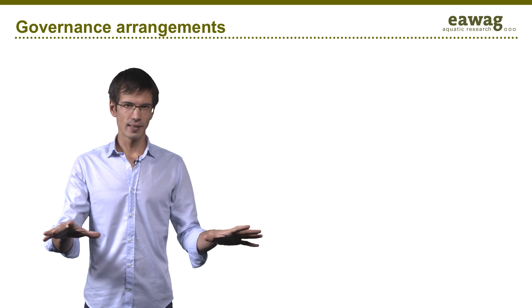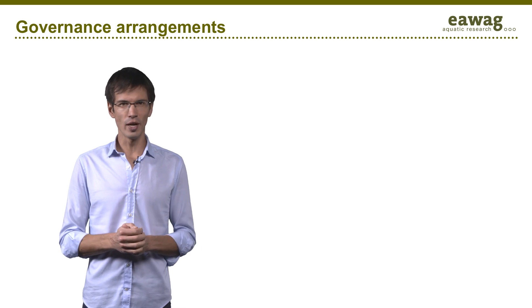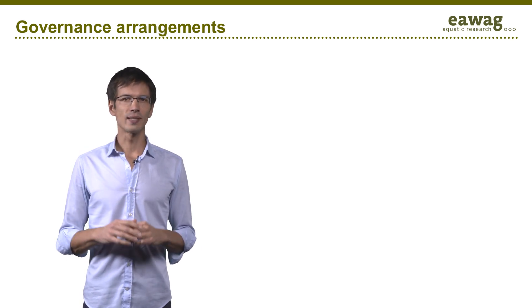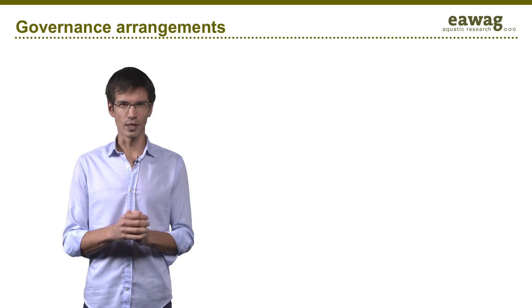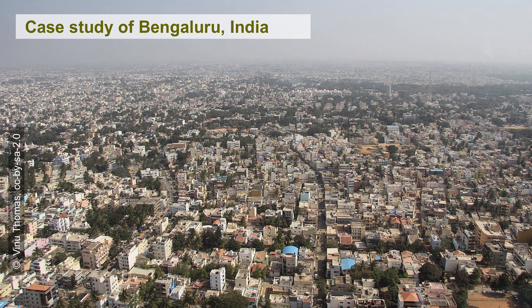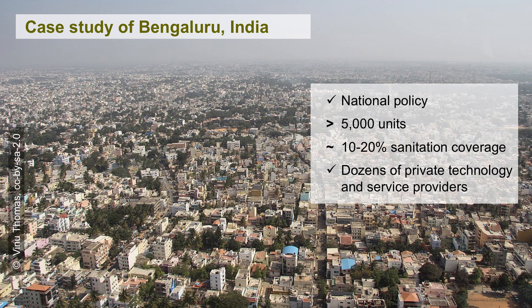The scaling up of decentralized systems needs to be accompanied by the development of appropriate governance arrangements and monitoring. Otherwise, the risk is high that they are not properly designed and operated. To illustrate this, consider the city of Bengaluru in India. Following a national policy requesting decentralized wastewater treatment plants for buildings above a certain size, more than 5,000 units were constructed. The policy sought to address rapid urban growth and increasing water scarcity, and it is estimated that 10 to 20% of the city's sewage is currently treated this way. This national policy allowed for the emergence of dozens of private technology and service providers. However, many of these systems do not perform satisfactorily because the quick scaling up was not accompanied by the development of the necessary management, monitoring, and training structures.